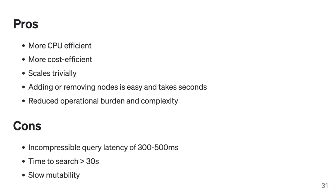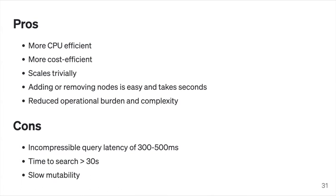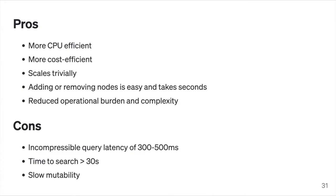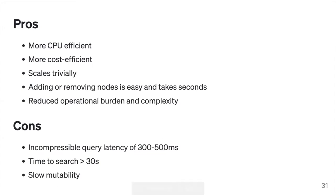For other use cases you may benefit from cost savings by using a system like QuickWit. Last but not least, operational burden and complexity is also reduced since you're using object storage — you get availability and durability for free. The cons: an incompressible query latency of 300 to 500 milliseconds, time to search of 30 seconds, and slow mutability. We support deletions only at a slow rate, for compliance reasons. Our splits are on S3 and pretty big, so modifying one document requires rewriting the whole split.